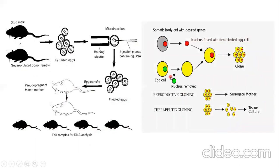This diagram is related to somatic cell nuclear transfer. As you can see here, we remove the haploid nucleus from the egg cell so that the egg cell becomes enucleated. We then remove the diploid nucleus from the somatic cell of the organism to be cloned, and insert that diploid nucleus into the enucleated egg cell. We get clone cells, and for reproductive cloning, we insert the clone embryo into a surrogate mother. With the help of this, we get the clone organism, which is genetically identical to the parent.